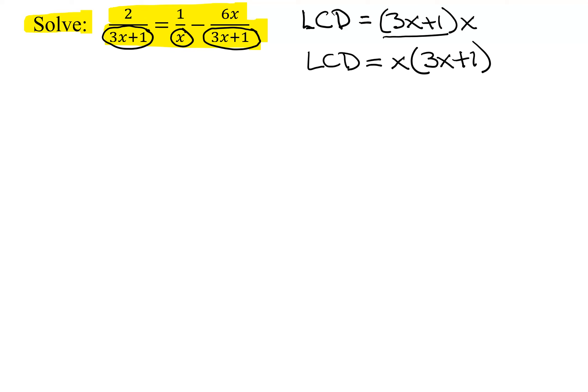But before we finish with doing this part, we have to talk about restrictions. Remember, we cannot divide by 0. So we have to figure out which values of x makes my denominator 0, and those are values that cannot be part of my answer set.